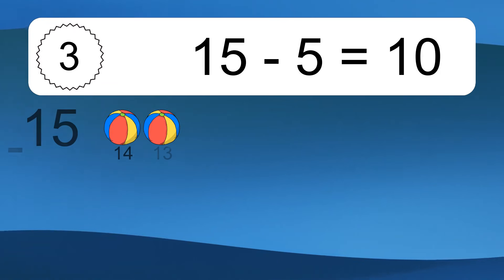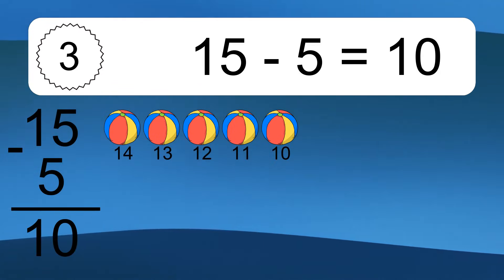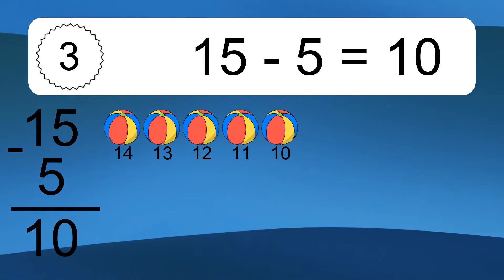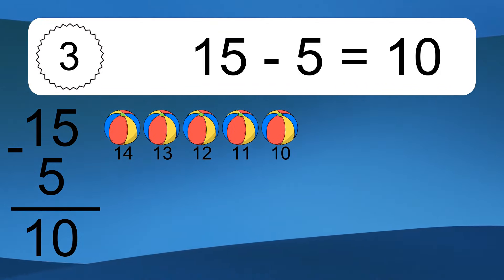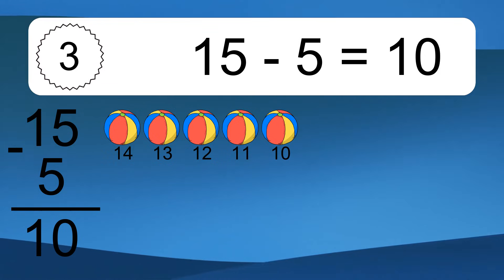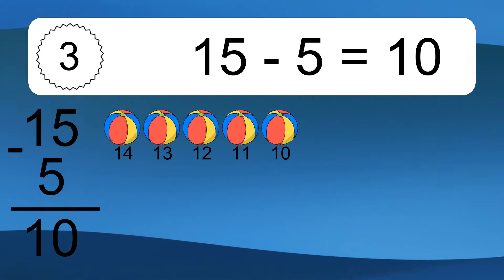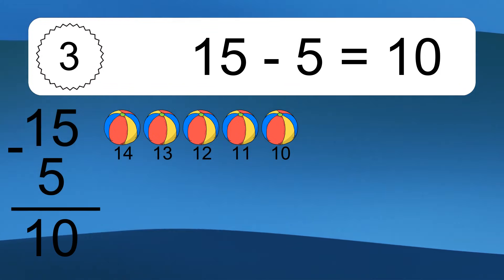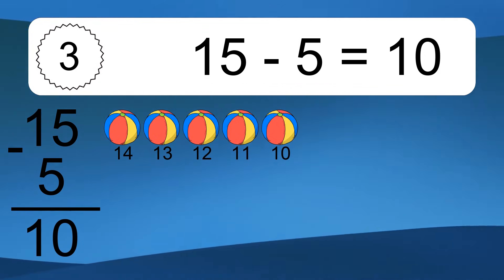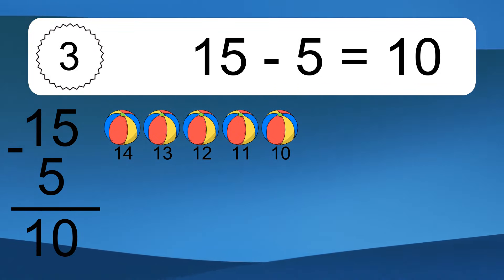15 minus 5 equals what? 15 minus 5 equals 10. Let's count it: 14, 13, 12, 11, 10.